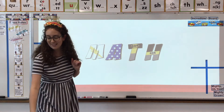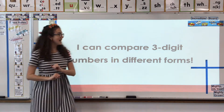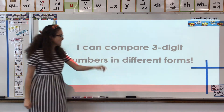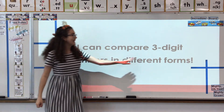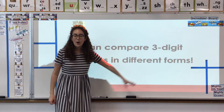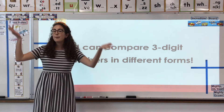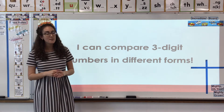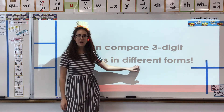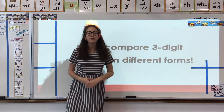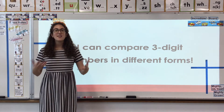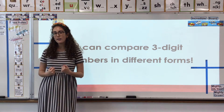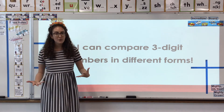So let's check out our learning target. It says: I can compare three-digit numbers in different forms. So we're still working to compare and use our brand-new math vocabulary and symbols, but we're going to compare numbers now that are in different forms. This is something we're bringing back from a couple weeks ago — bringing back our knowledge of different number forms.